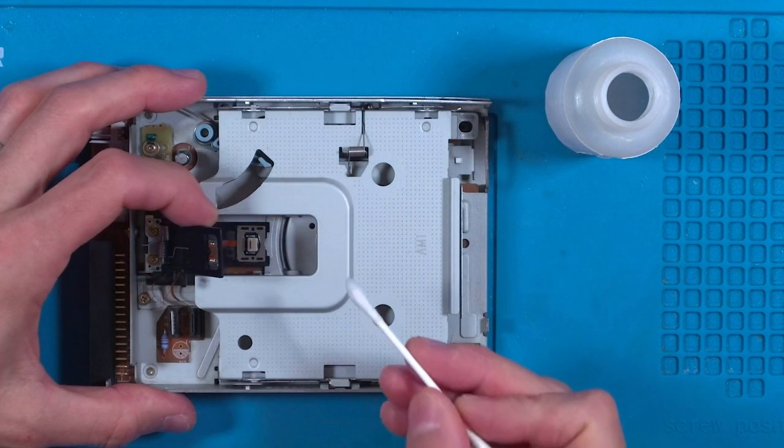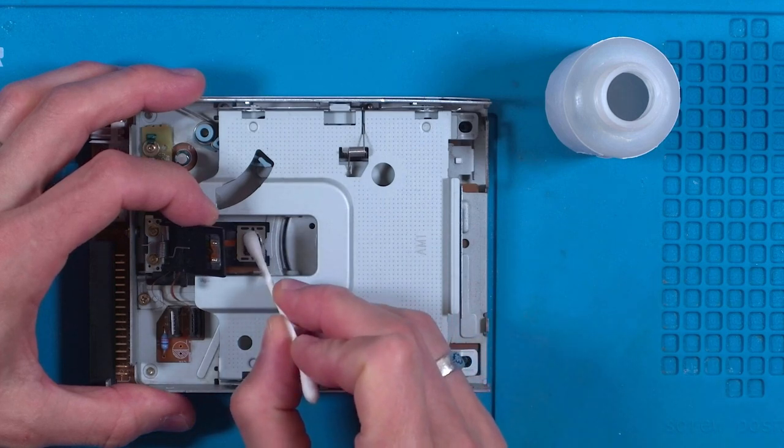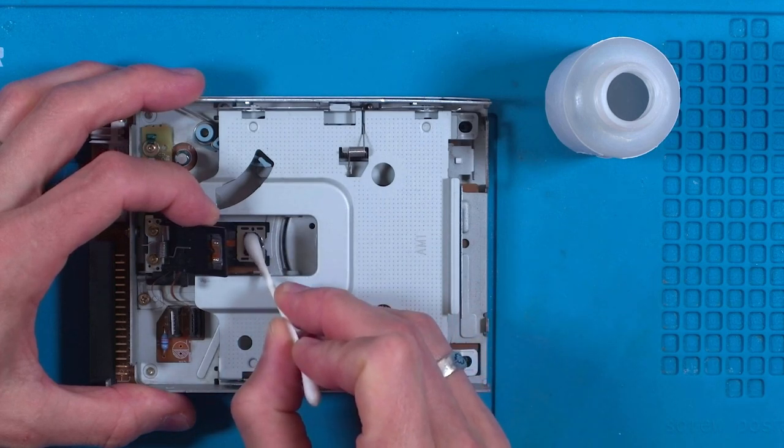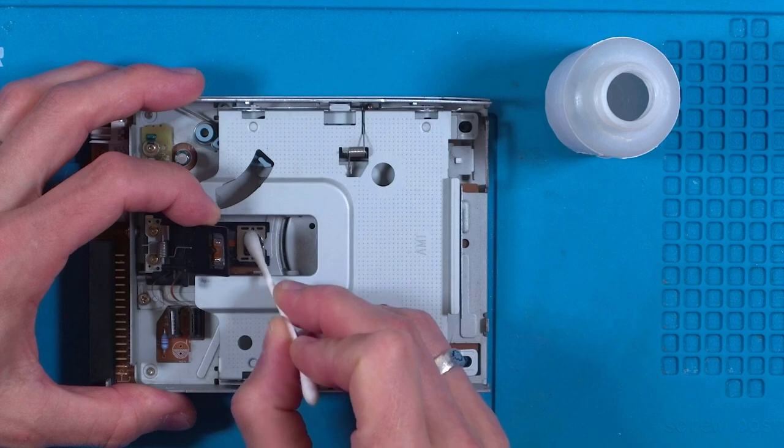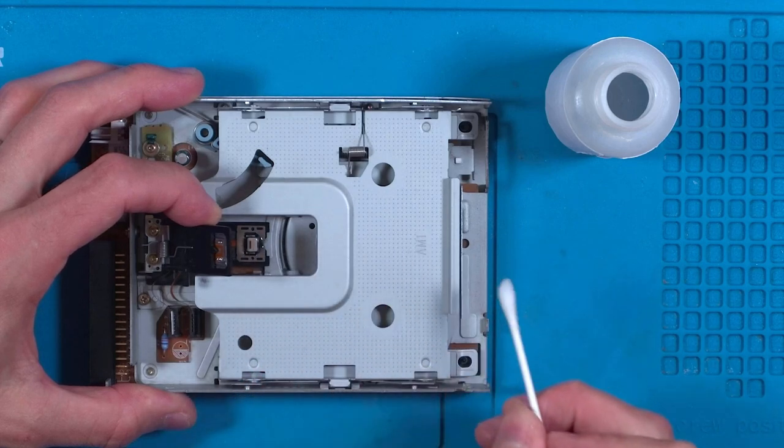Now the way I do this is to dip the bud into the isopropanol and gently rub it onto the heads. You can apply some pressure but not too hard. It's much better to just repeat this process several times rather than press too hard.